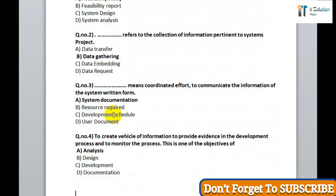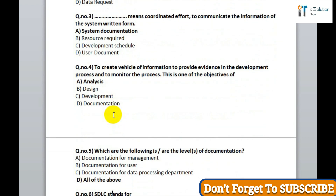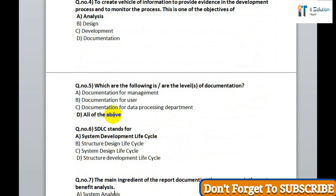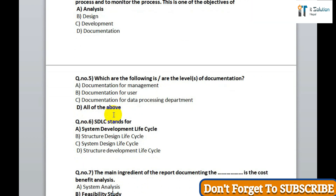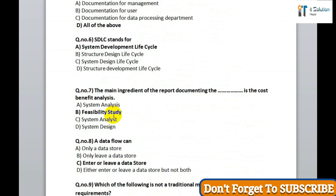Question 4: to create vehicles of information, to provide evidence in the development process, and to monitor the forces — this is one of the objectives of option A, analysis. Question 5: which of the following are the levels of documentation? Correct answer is option D, all. Question 6: SDLC stands for option A, System Development Lifecycle. Question 7: the main ingredient of the report documenting the data is the cost-benefit analysis — correct answer is feasibility study. Question 8: data flow can correct answer is option C, enter or leave data stored.